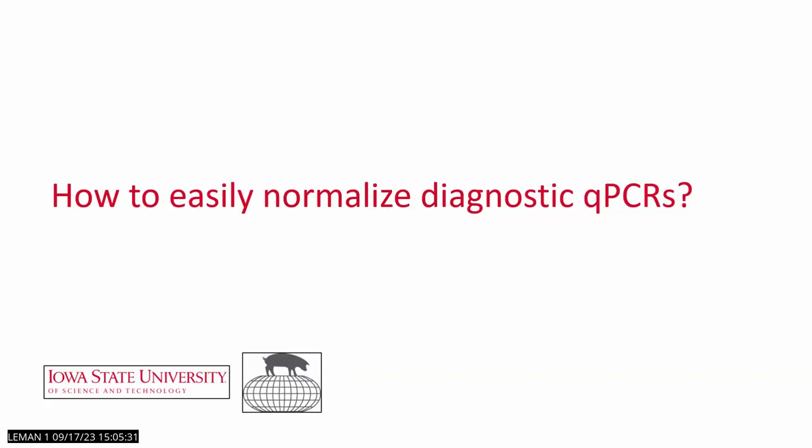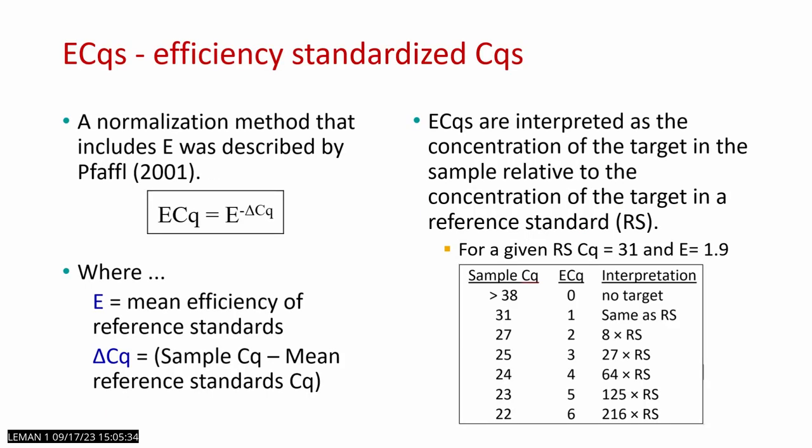How do we normalize for diagnostic PCRs? There's a normalization method that includes efficiency, described in 2001 and later readapted and renamed efficiency-standardized CQs, or ECQs. They are calculated with the equation ECQ = e to the power of negative delta CQ, where e is the efficiency of the reference standard and delta CQ is the difference between the sample CQ and the reference standard CQ. ECQs are interpreted as the concentration of target in the sample relative to the concentration of target in the reference standard.